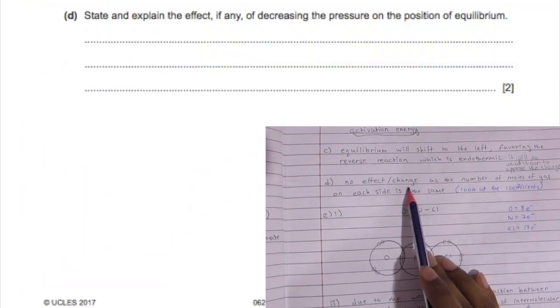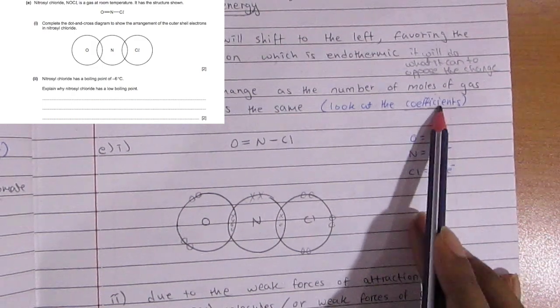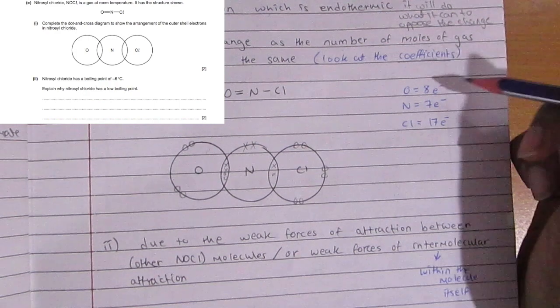State and explain the effect of decreasing the pressure. There's no change simply because the number of moles are the same on both sides. You can look at the coefficients.